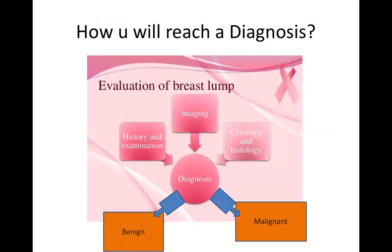So how will you reach a diagnosis after triple assessment? You will reach a diagnosis with certainty — about 99.9% sure — that this is a benign or malignant lump, and then you provide treatment accordingly.